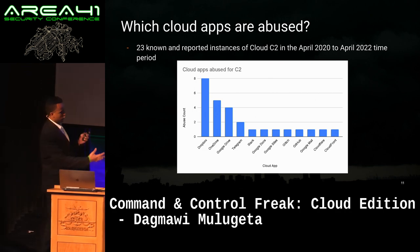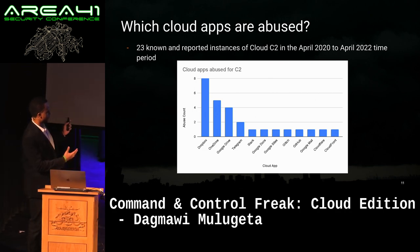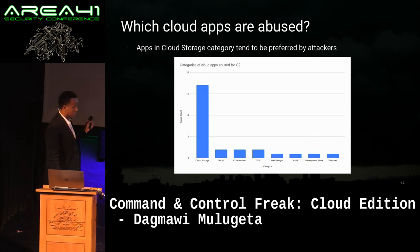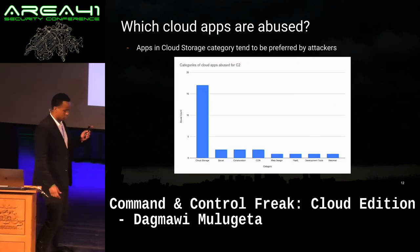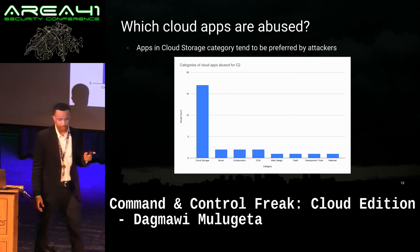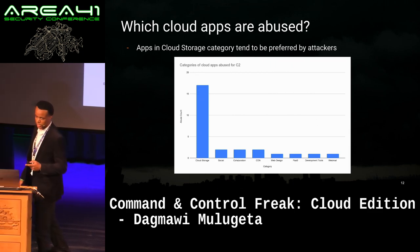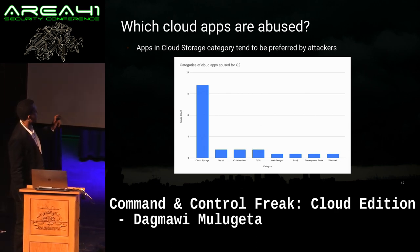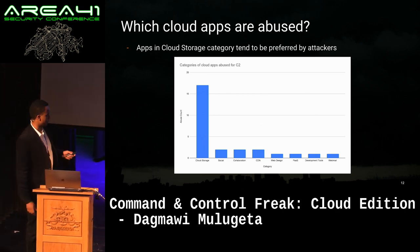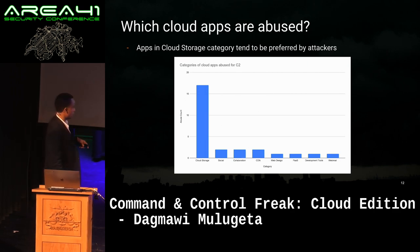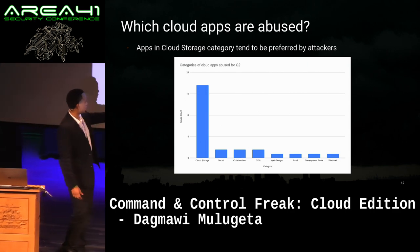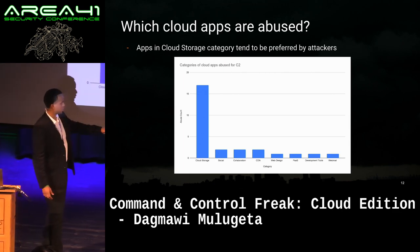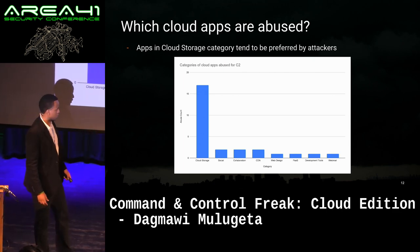There's a general preference towards the first three — Dropbox, OneDrive, and Google Drive. This preference is even more pronounced if we categorize these cloud apps based on the services they provide. Cloud storage apps are by far the most preferred at 17 instances of the 23, followed by social collaboration and CDN apps at two instances each, and then web design, platform as a service, and webmail all at one instance.